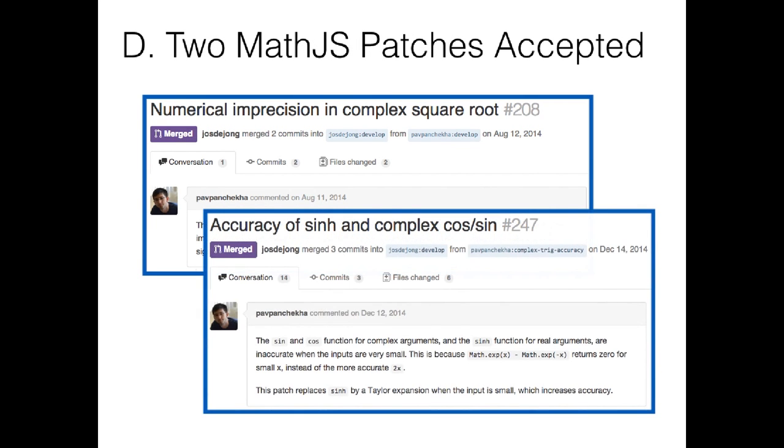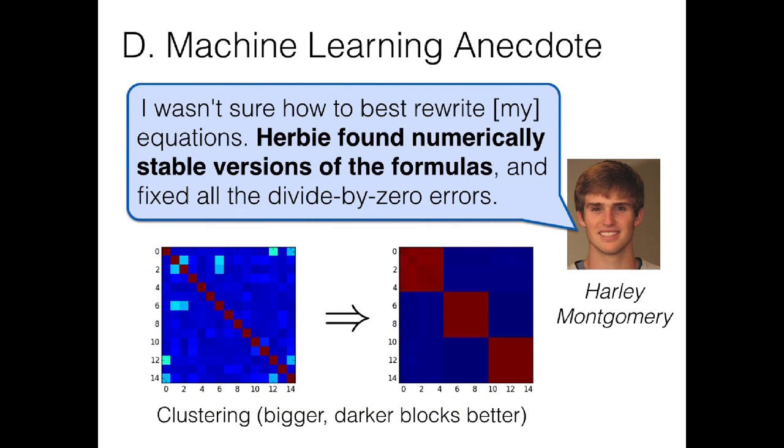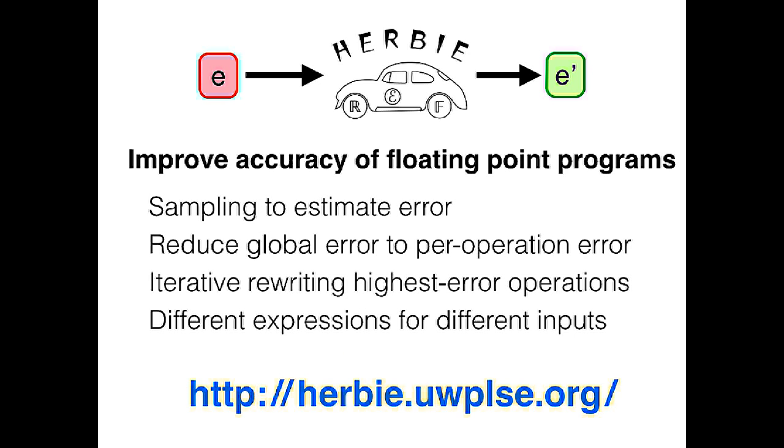We've had two patches accepted to an open-source math library, where the patch was generated by Herbie. And we've also had our colleagues in machine learning improve the accuracy of their clustering algorithm. Here, the plots show the clusters formed. The left-hand side doesn't form any clusters, where the right-hand side forms three stable clusters, which is what we expected in this one. So that's Herbie, an automatic tool to improve the accuracy of floating-point programs. We use sampling to estimate a ground truth for the floating-point expression, then reduce that global error to per-operation local error, at which point we can use an iterative heuristic search to rewrite those high-error operations into programs that do better. We can then combine different expressions on different inputs into a single accurate program, which generally improves the accuracy of a floating-point expression, both on benchmarks and on real-world code. Thank you.